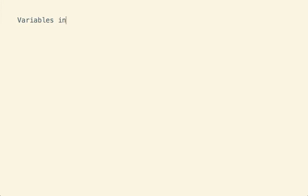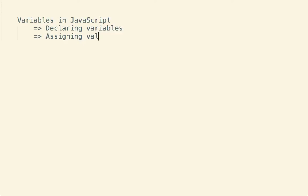The topic of this screencast is variables in JavaScript. To talk about this, we're going to have to talk about a couple of things like declaring variables, assigning values to variables, and data types. So let's quickly run through what these things actually mean.